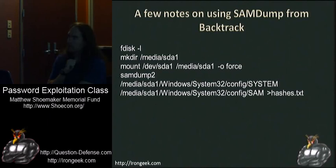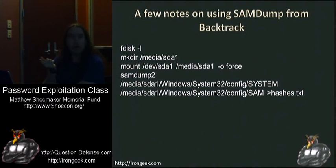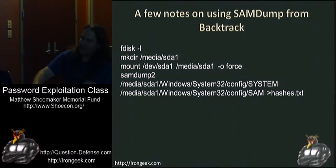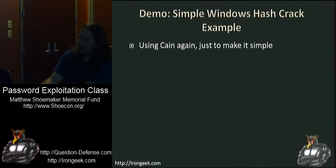Essentially you find which disk is in an NTFS partition, mount it, use the 'force' flag in case it was dismounted uncleanly, then run SAMdump2 pointing to the system hive to extract the SysKey, and point to the SAM file to pull the password hashes, piping output to hashes.txt. Instead, I'm just going to use Cain because I'm incredibly lazy.